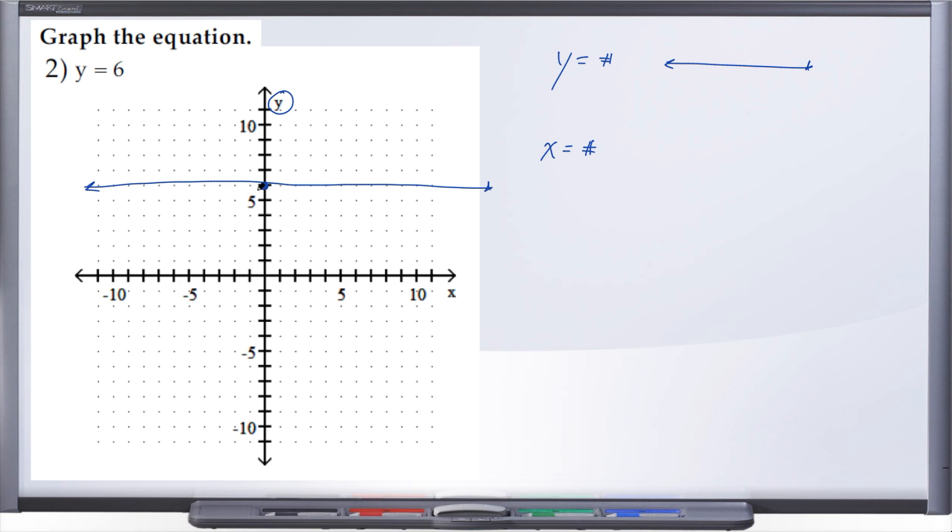If we were given x equals some number, you're going to go to the x-axis. So let's say, for example, we were given x equals, I don't know, how about negative 3. Go to the number you've been given on this axis, so go to the x-axis, go to negative 3.